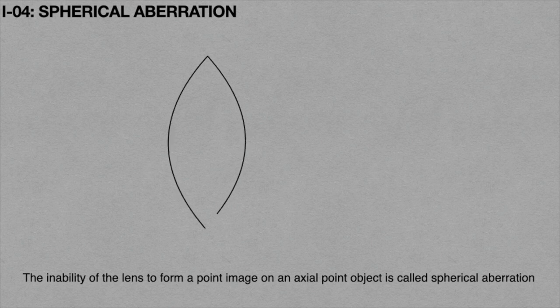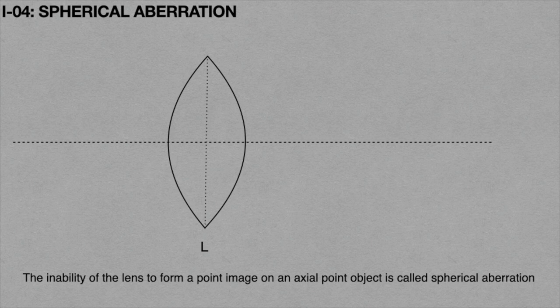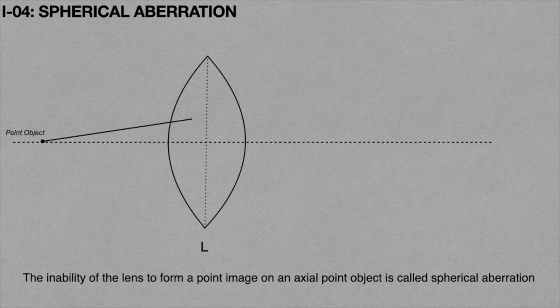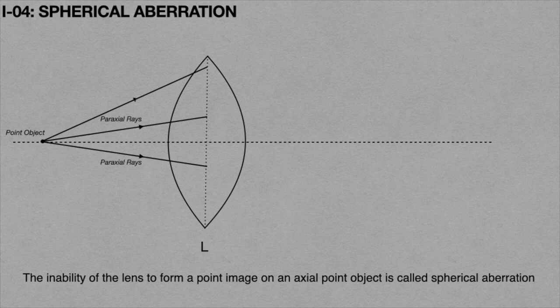In order to explain spherical aberration, consider a lens L which has a principal axis and optical axis — both are mutually perpendicular to each other. Now, consider a point object on the principal axis. Consider the light rays incident on the lens which are very near to the principal axis — these are called paraxial rays. Similarly, light rays incident on the lens which are very far away from the principal axis are called marginal rays.